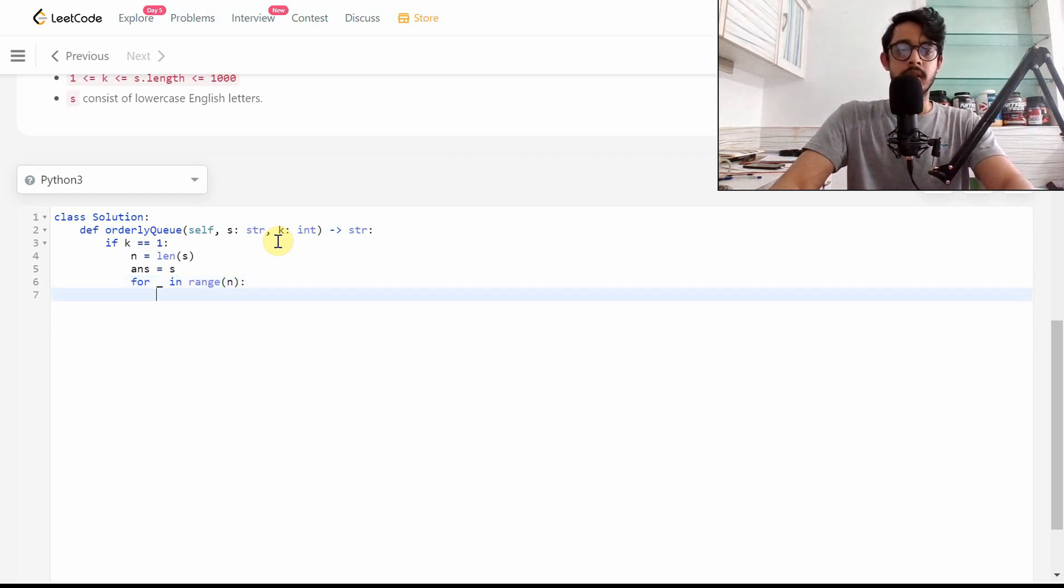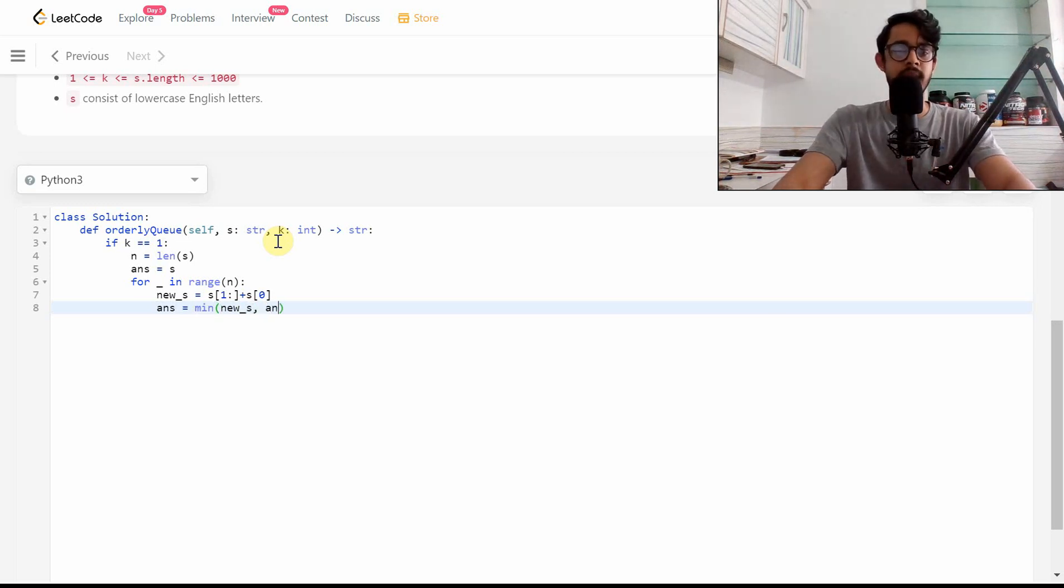We'll iterate over it n times—each time we'll pick the first element, kick that out, and put it at the end. So we'll have new_s which is s[1:] and then s[0]. We have the new_s in hand, so we can do answer equals the minimum of new_s and the answer itself.